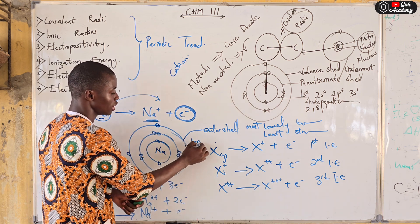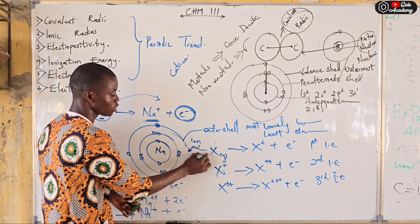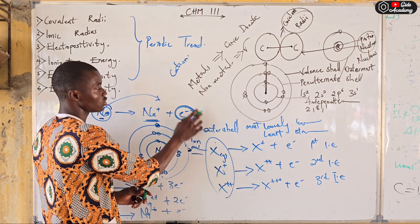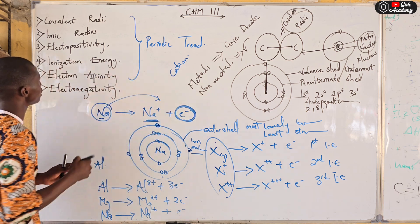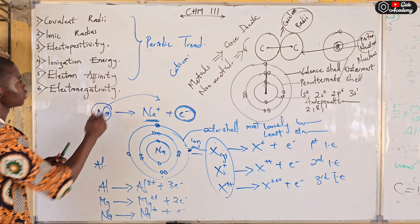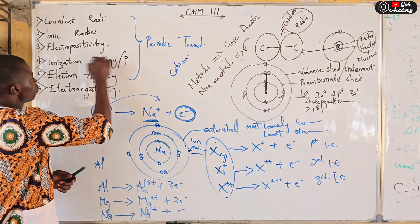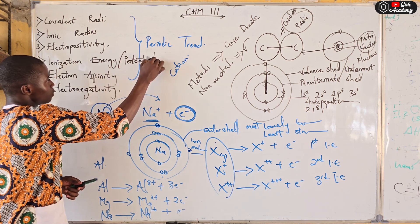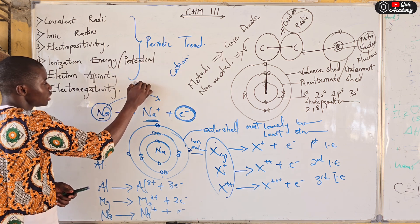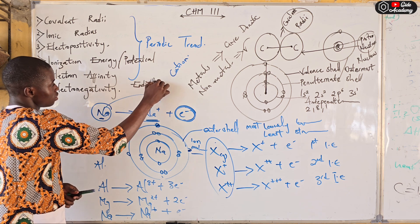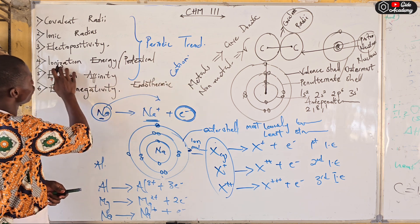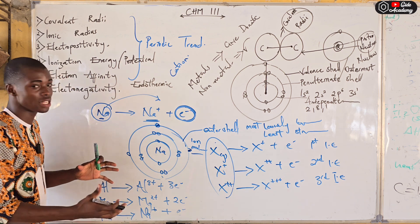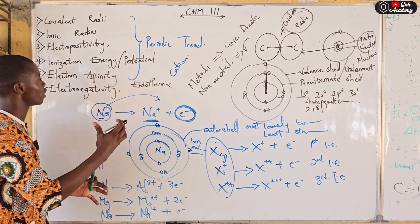Ionization energy can apply to an ion, a molecule, or an atom. The energy involved is called ionization energy, and this process is also referred to as ionization potential. Importantly, ionization energy is an endothermic process — please take note — meaning it absorbs energy from the surroundings.